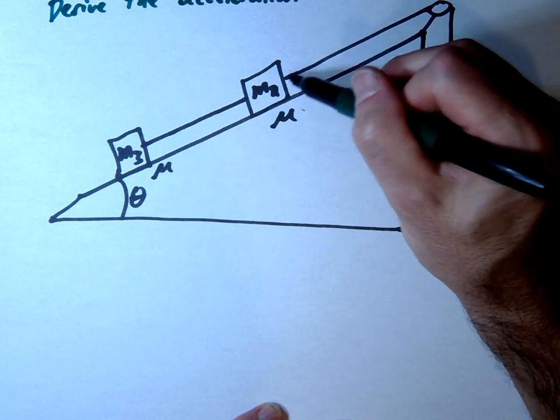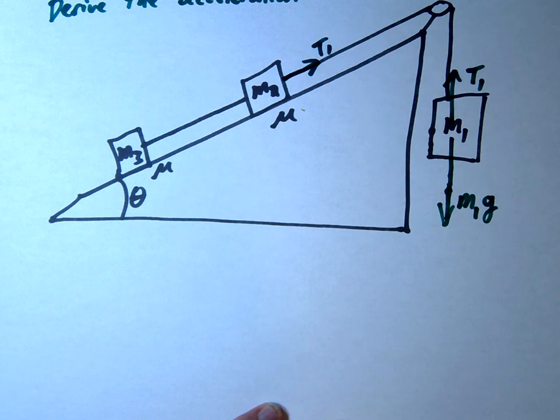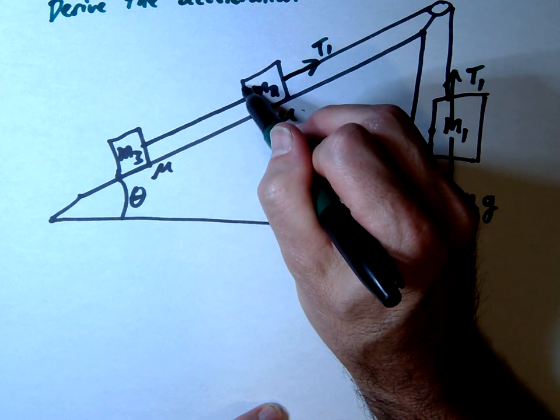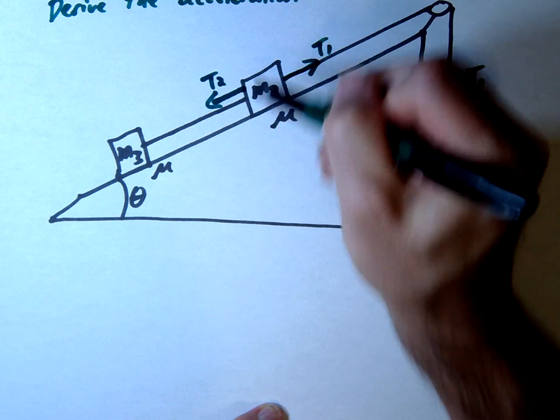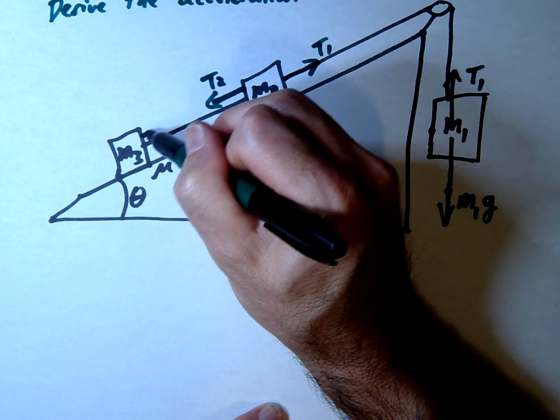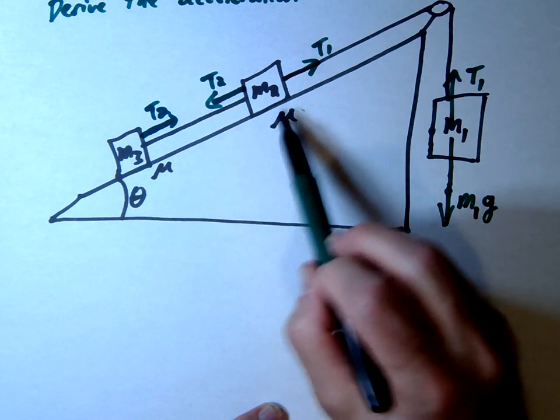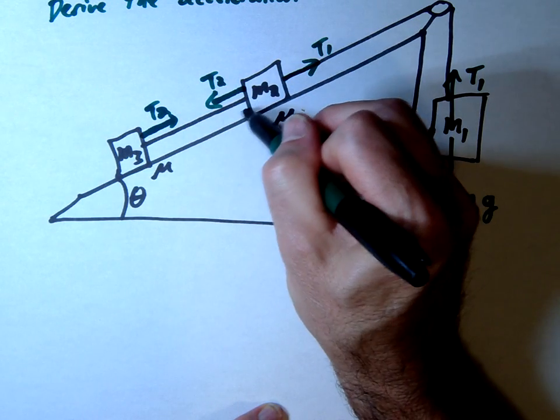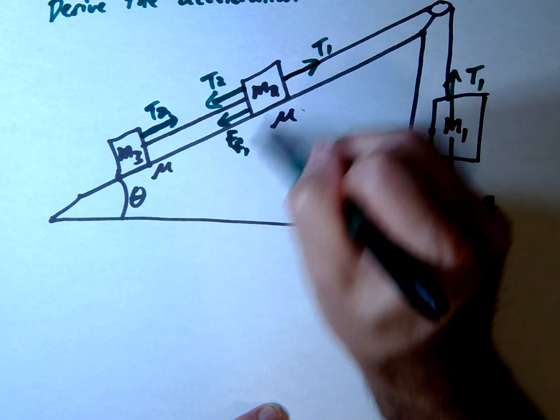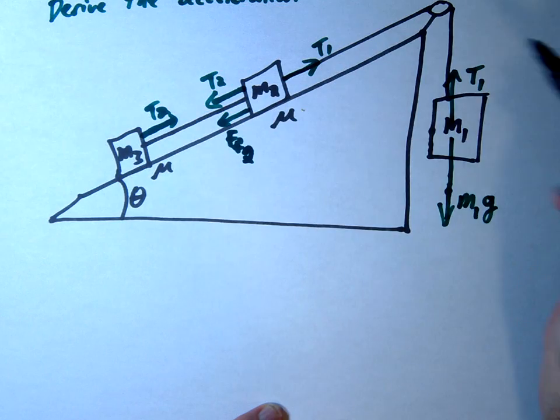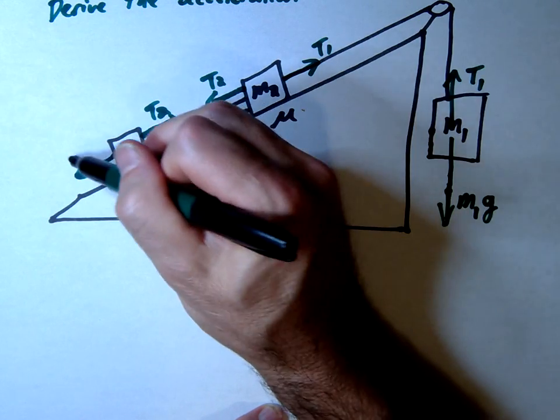This one then we're going to have tension 2, sorry this is still tension 1 here. This one is going to pull back down with the tension 2. So we'll call that T2 and this one is going to pull back up with the T2. I did say there's friction here, we have some coefficients so let's just call this FF1. Actually I guess we can call this, since it's mass 2 we'll call it FF2 and this one we'll call FF3.